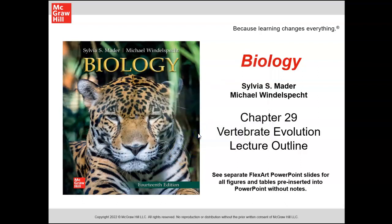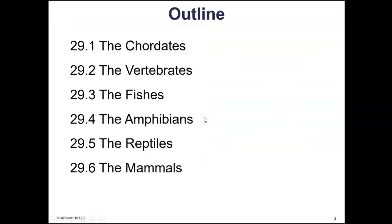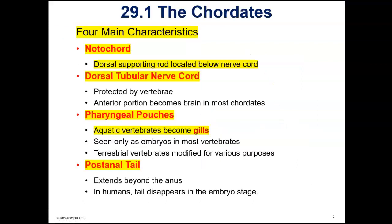These are the lecture notes for chapter 29 on vertebrates. First of all, you need to understand that the animals in this chapter are all in the same animal phylum called the phylum chordata. We call them the chordates.